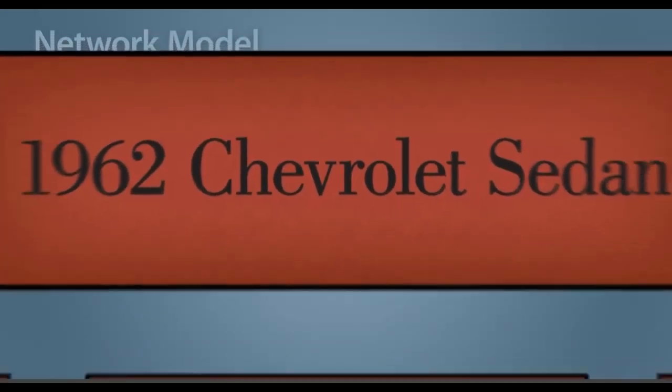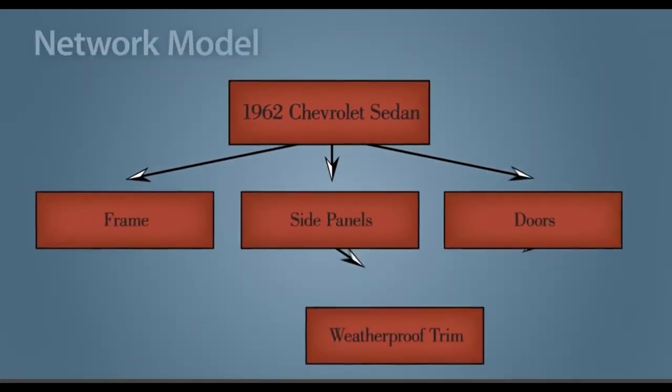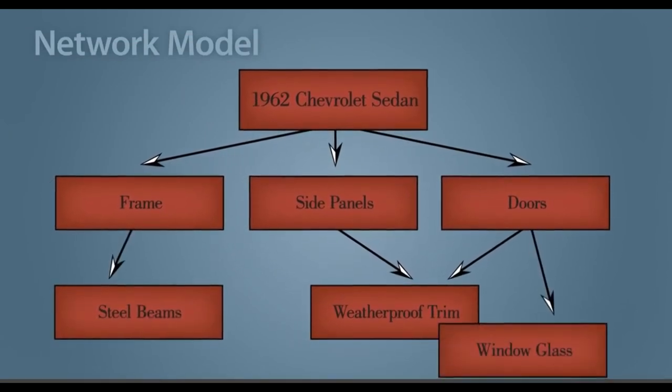IBM's IMS was successful and was also used by NASA to manage drawings for the lunar lander. A more flexible network model was then developed by Charles Bachman, where child nodes could have multiple parents.